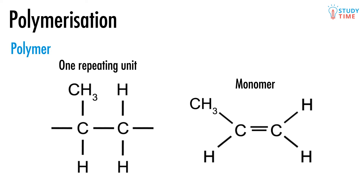It's very important that you can understand how one repeating unit of the polymer is different from the original monomer that we began with. The monomer, you'll remember, was an alkene. This repeating unit is similar to the monomer, but it has no double bond, and those two bonds on the carbon simply connect to nothing whenever we draw the repeating unit. In the actual polymer, they join to more of those repeating units.